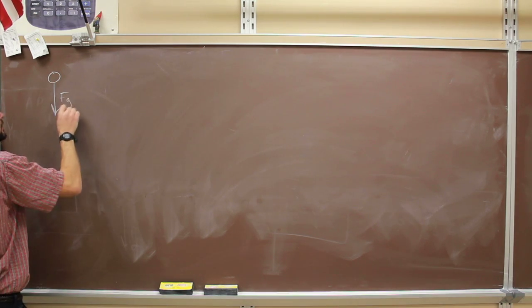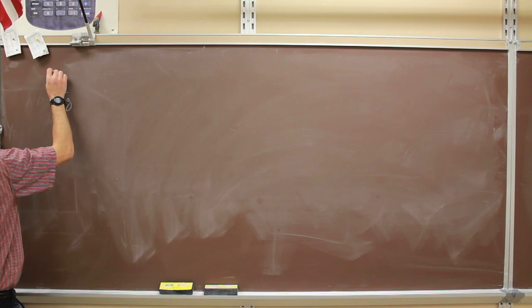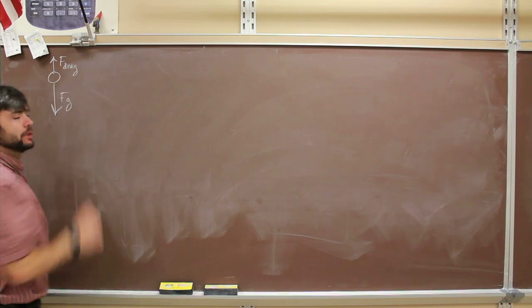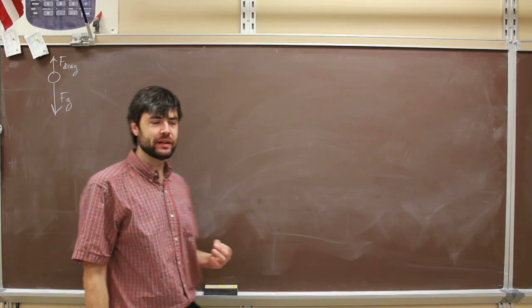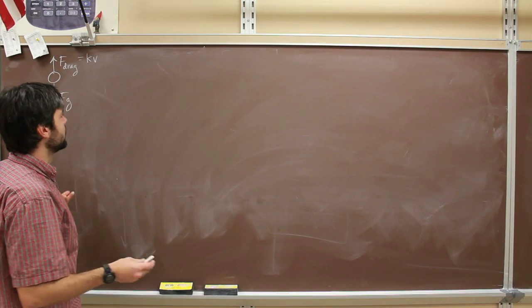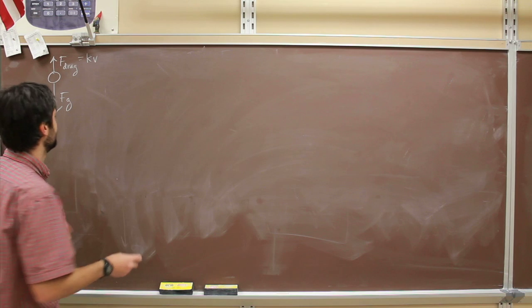So our free body diagram looks like this. We have the force of gravity and we have a drag force. Because it's laminar, not turbulent, we're going to use kV because that's the amount of drag. If we want to solve an equation for velocity, we start with our F_net equation.